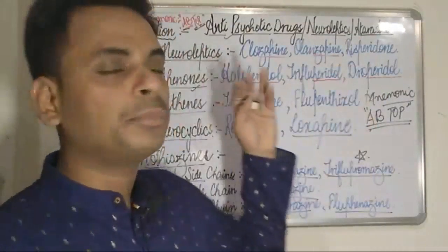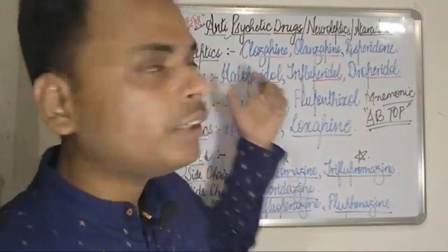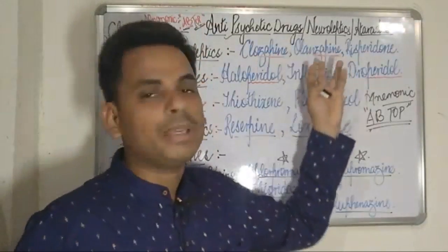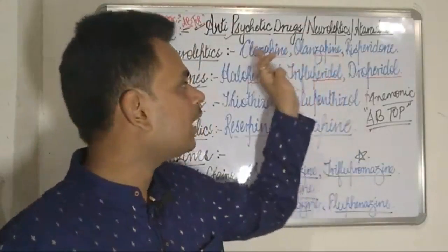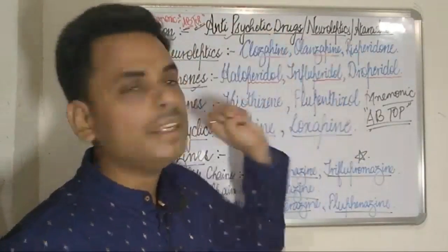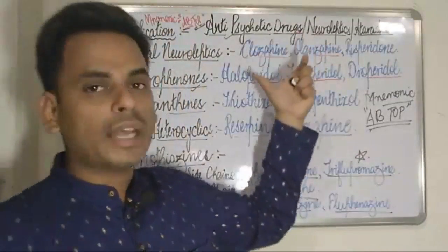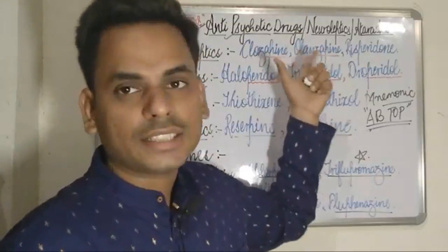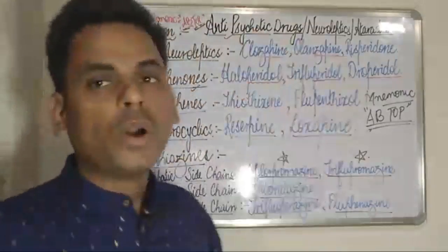Most of the famous drugs of the atypical neuroleptics end with the suffix '-apine' — for example, clozapine and olanzapine — and they also have the suffix '-pine' after them. These are two classes where the famous drugs have the suffix '-pine'. Moving on to B of ABTOP.